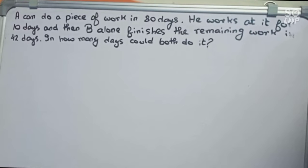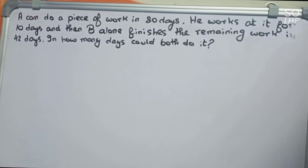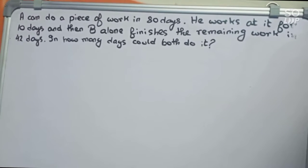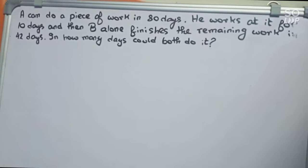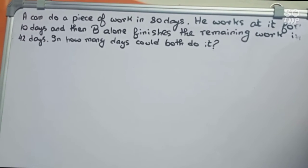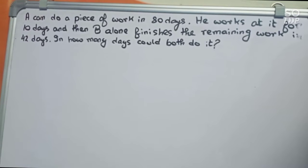Hello guys, welcome to this video. In this video our question is: A can do a piece of work in 80 days. He works at it for 10 days and then B alone finishes the remaining work in 42 days. In how many days could both do it?